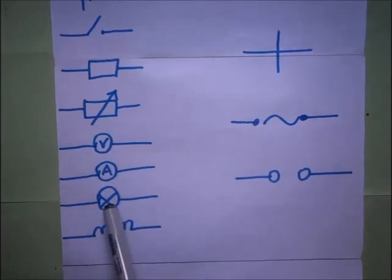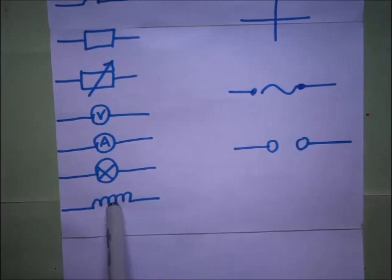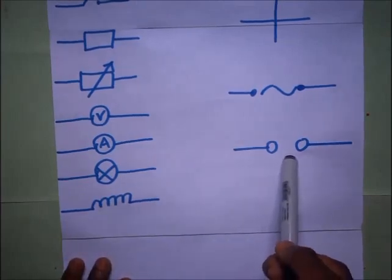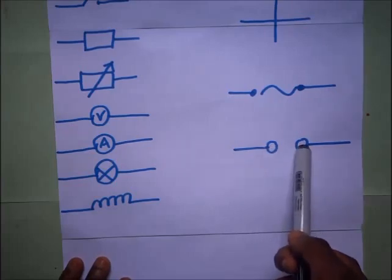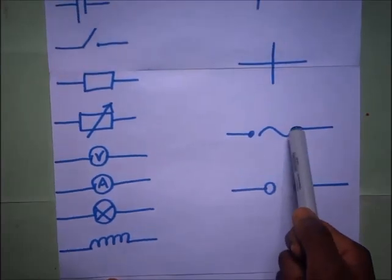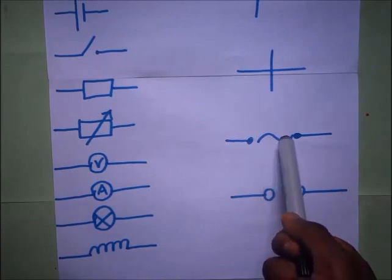This is a symbol for a bulb. This is a symbol for an inductor. This is a symbol for a DC source or direct current source. This is a symbol for an AC source or an alternating current source.